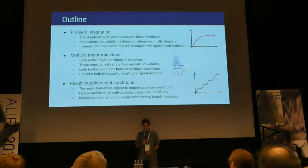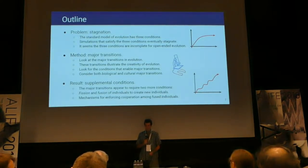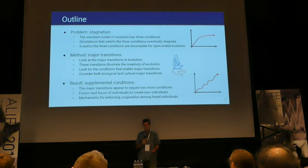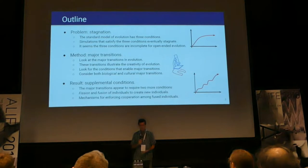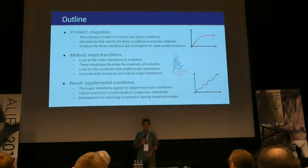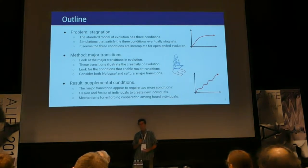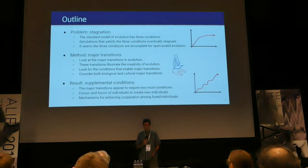My idea is to look at the major transitions in evolution. The idea is that if we analyze these major transitions, we might be able to discover how life is able to avoid stagnating. The conclusion I've come to is that we need a couple more conditions: fission and fusion of individuals, and some kind of mechanisms that support cooperation among fused individuals.